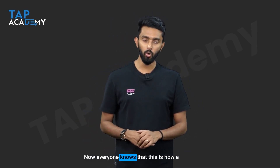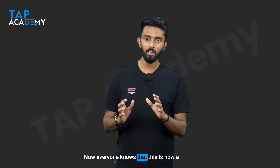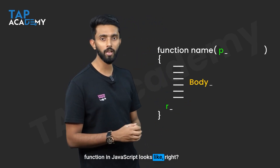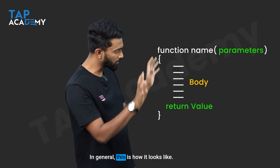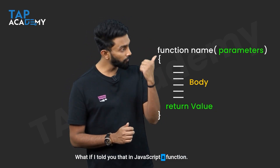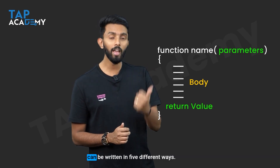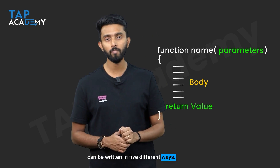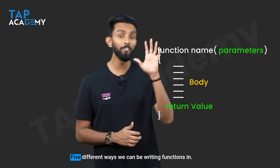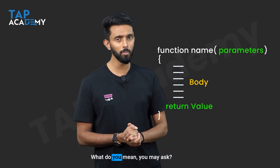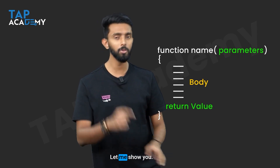Now everyone knows that this is how a function in JavaScript looks like. In general, a function can be written in five different ways. Yes, you heard me right — five different ways we can be writing functions. What do you mean, you may ask? Let me show you.